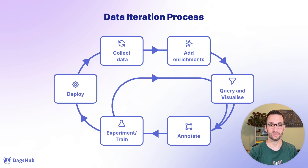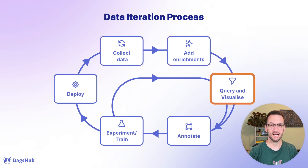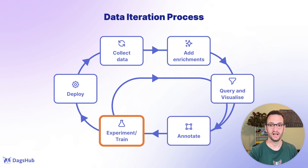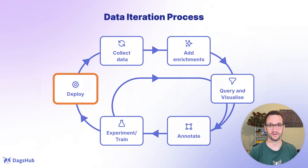To upgrade your dataset quality, you'll need to go through a process that includes collecting new data, enriching it with context, querying and analyzing it, annotating the samples and reviewing their quality to decide whether to incorporate them into your training set, and then retraining your model, and finally deploying the new model to production. This marks the end of one cycle and the beginning of another.